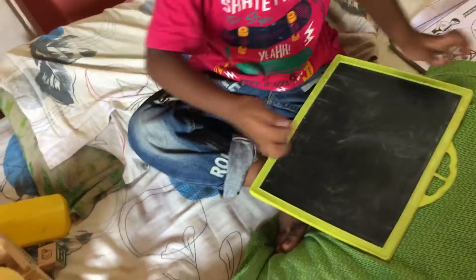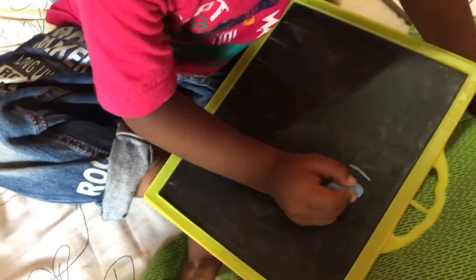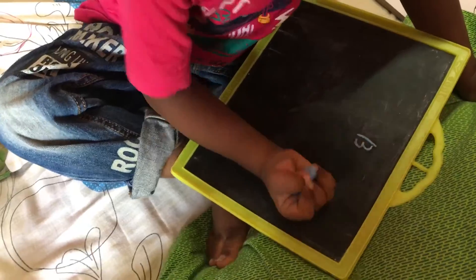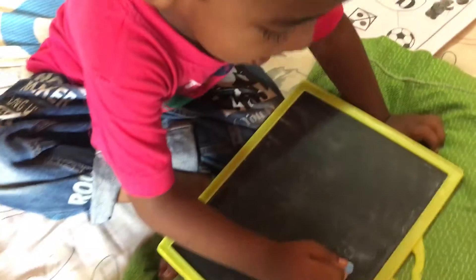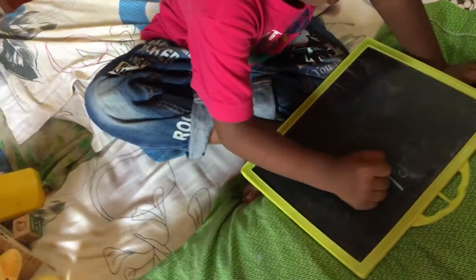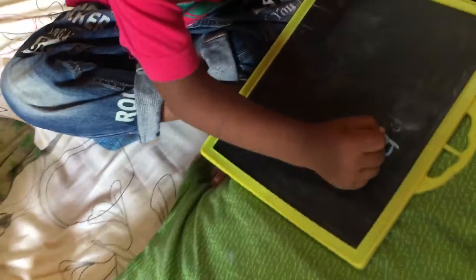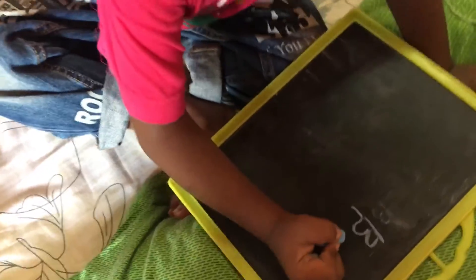Wait one second. Say: standing line. Write big letters. Say what you are writing: standing line, left curve, and left curve.